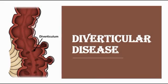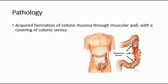Today in this video I'm going to be talking about diverticular disease. Diverticular disease is an acquired herniation of the colonic mucosa through the muscular wall with a covering of the colonic serosa. So mucosa is the inner lining of the colon, so it herniates through the muscular wall into the serosa, with the covering of the serosa which is the outer layer of the colon wall.